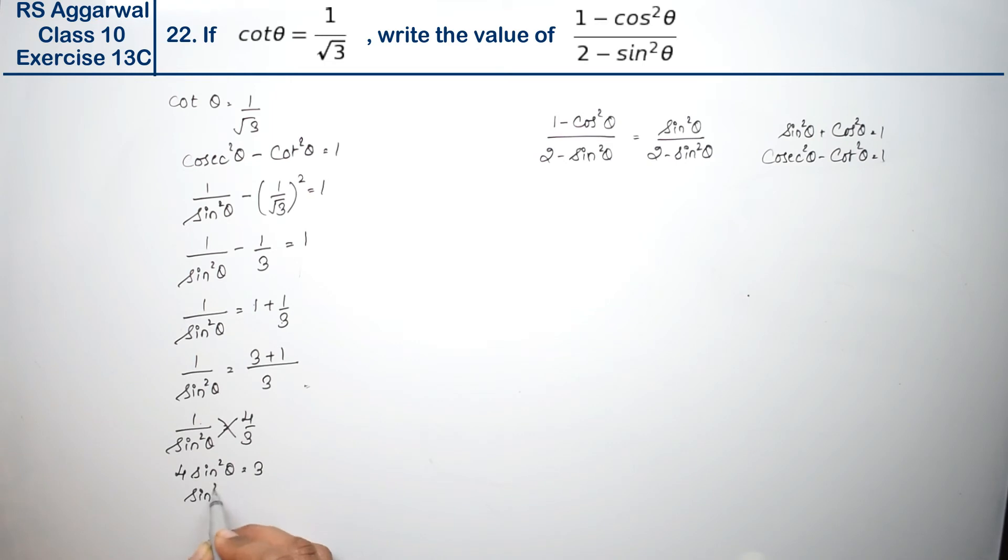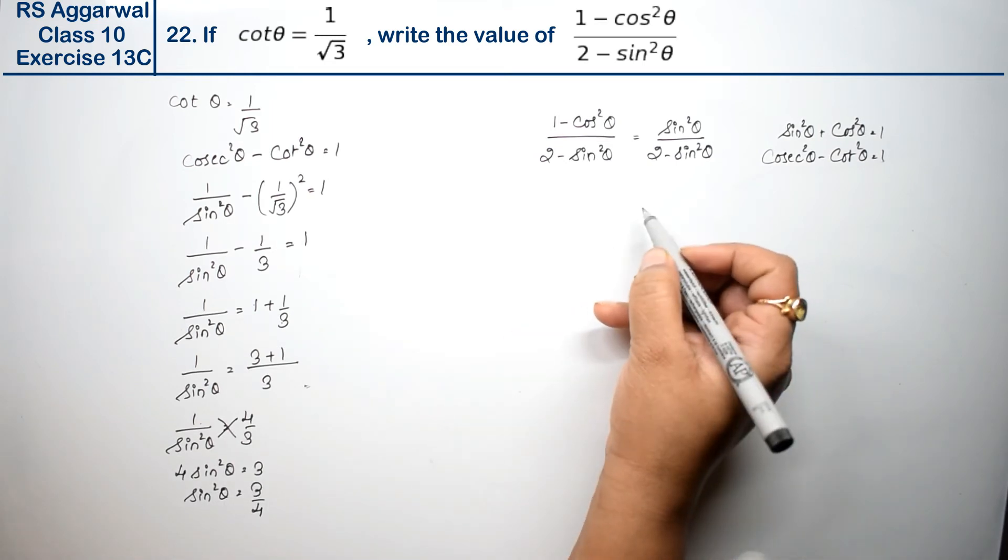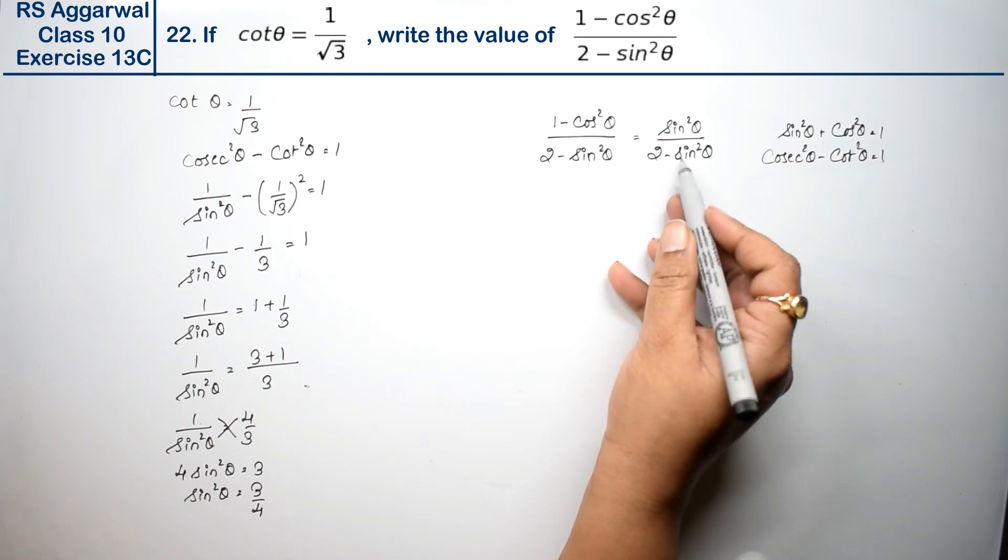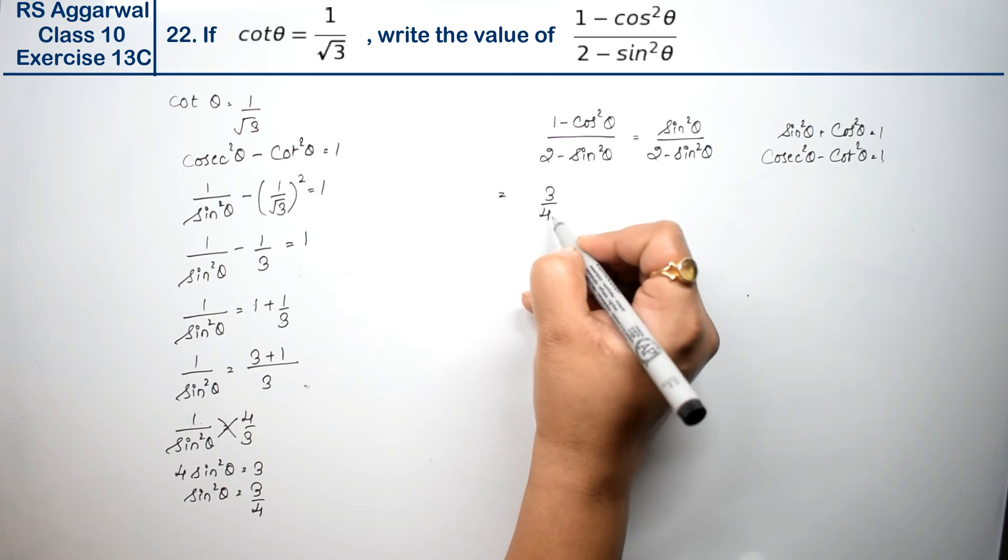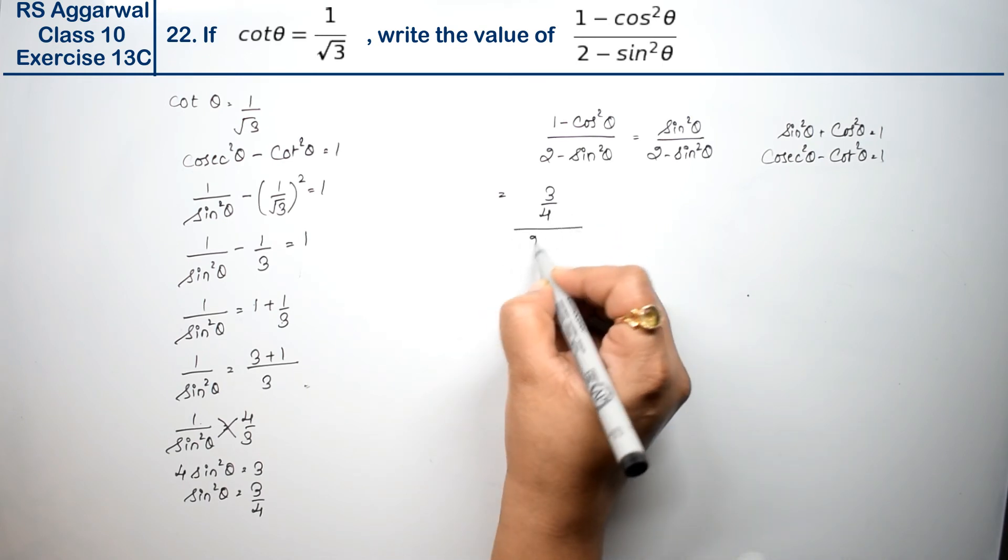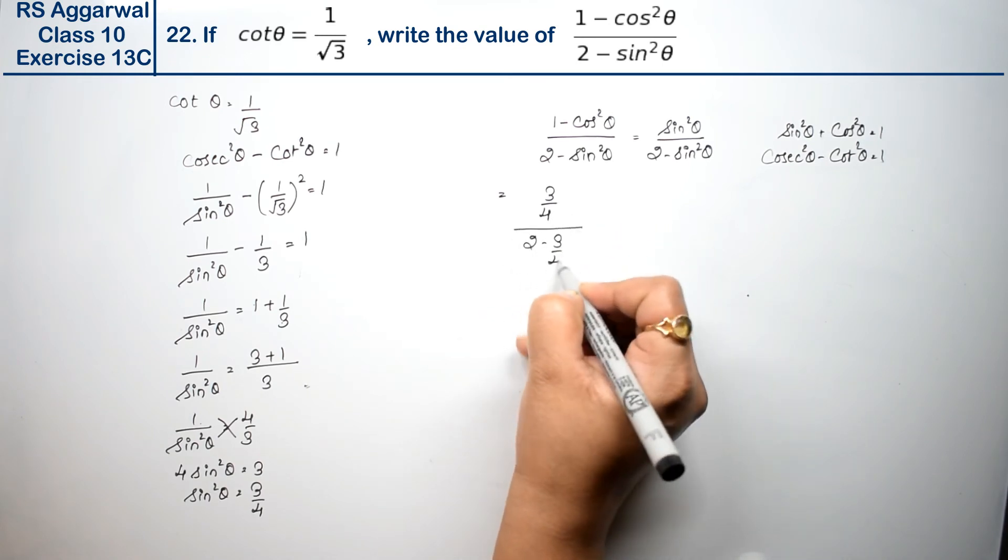So sin²θ value is 3/4. Now we can substitute it here. So this is sin²θ, that is (3/4)/(2 - 3/4), right?